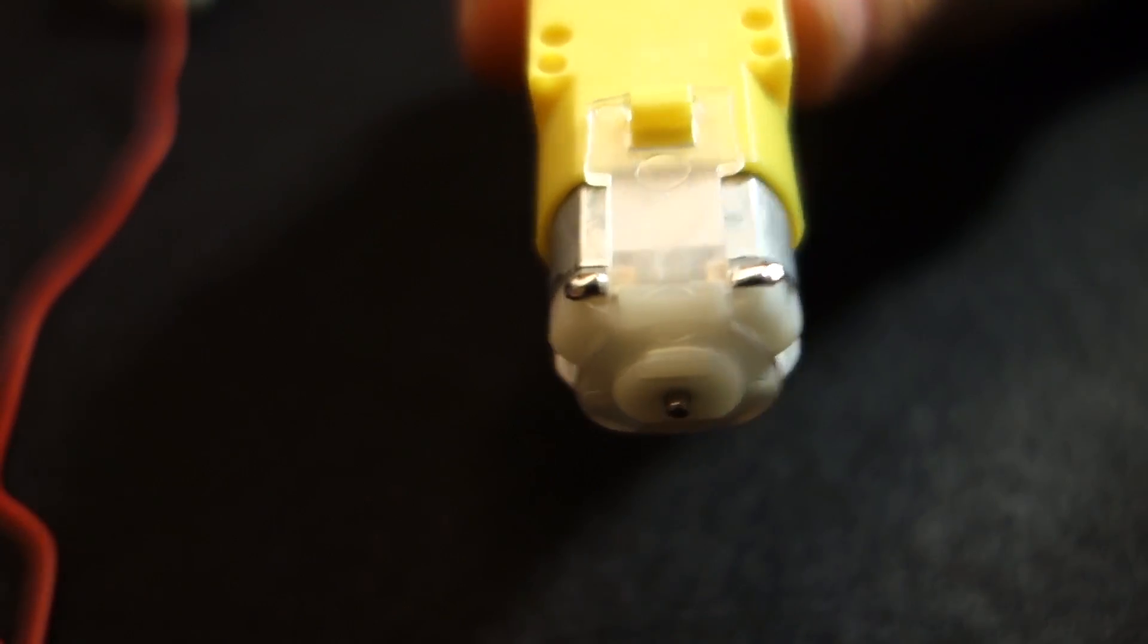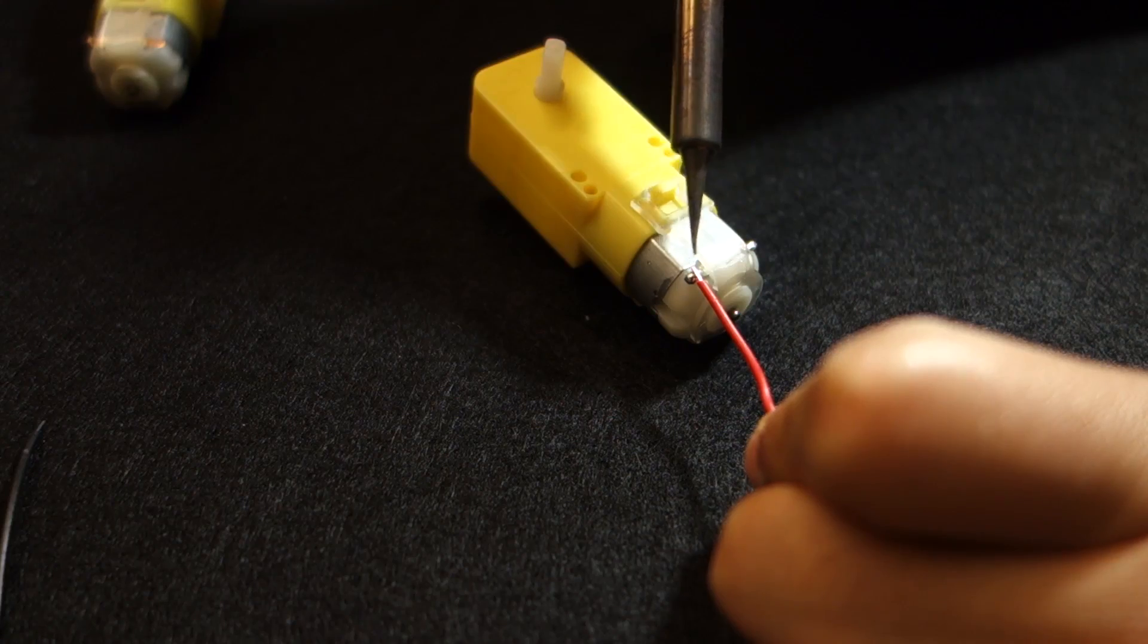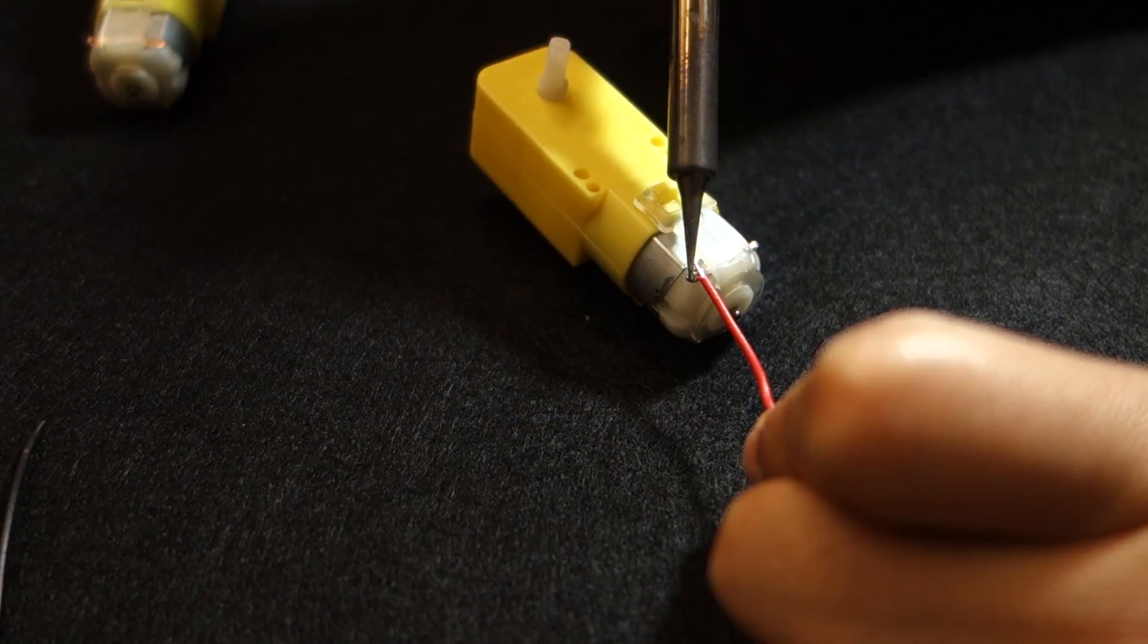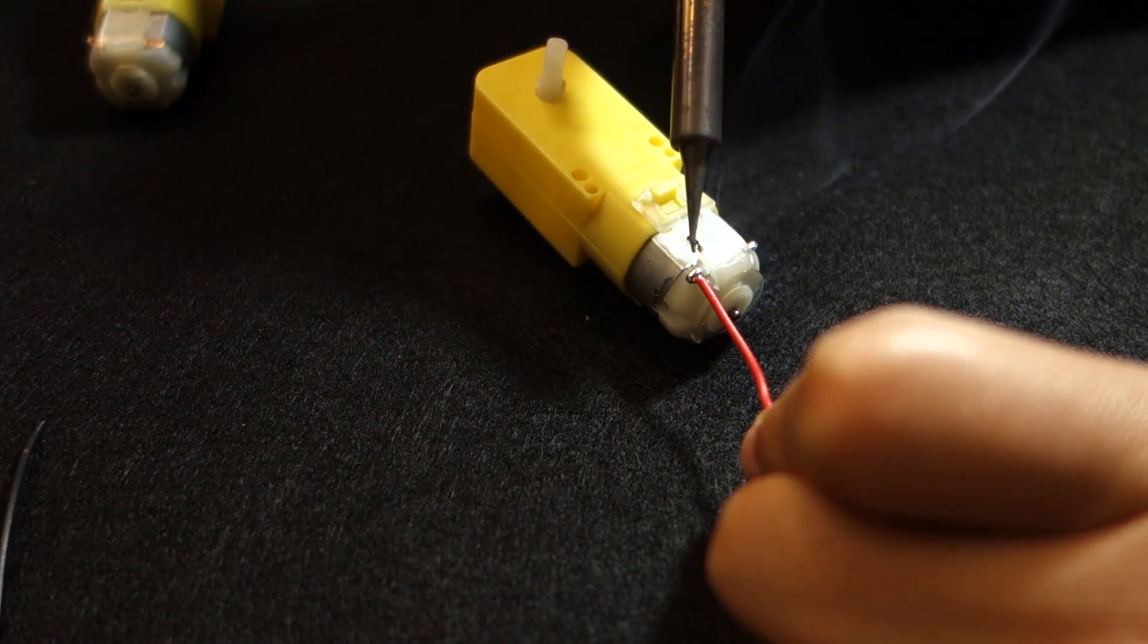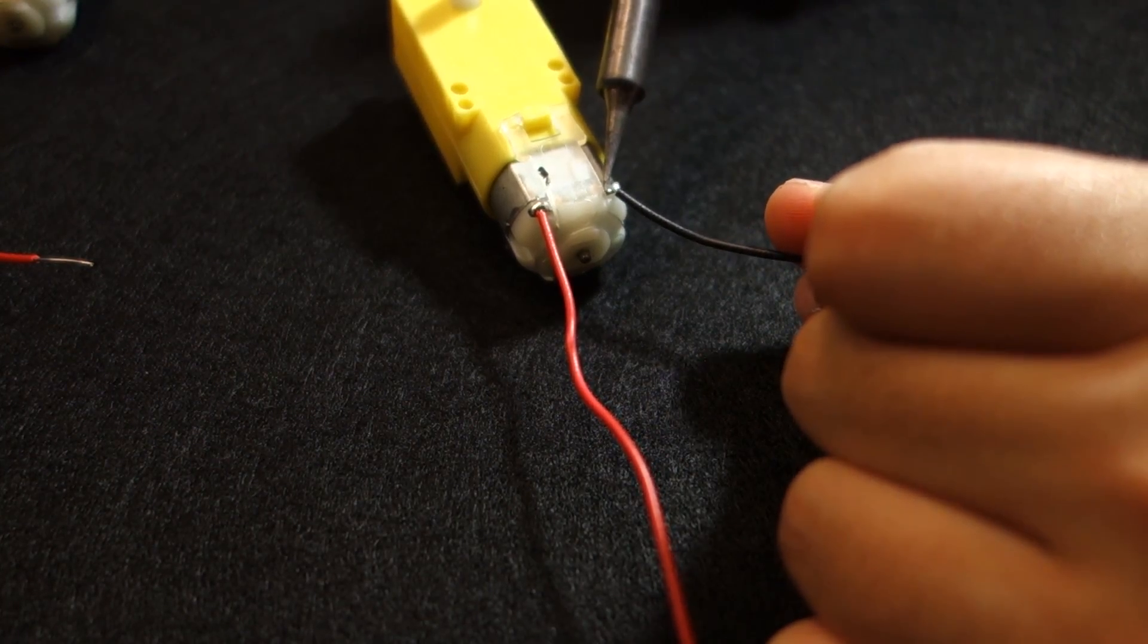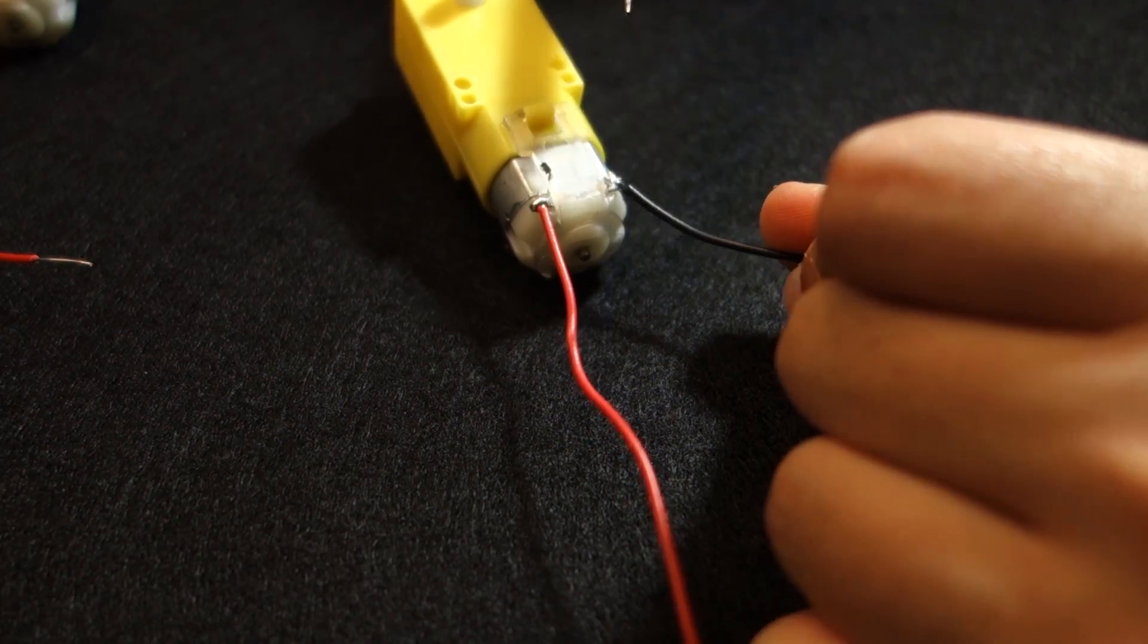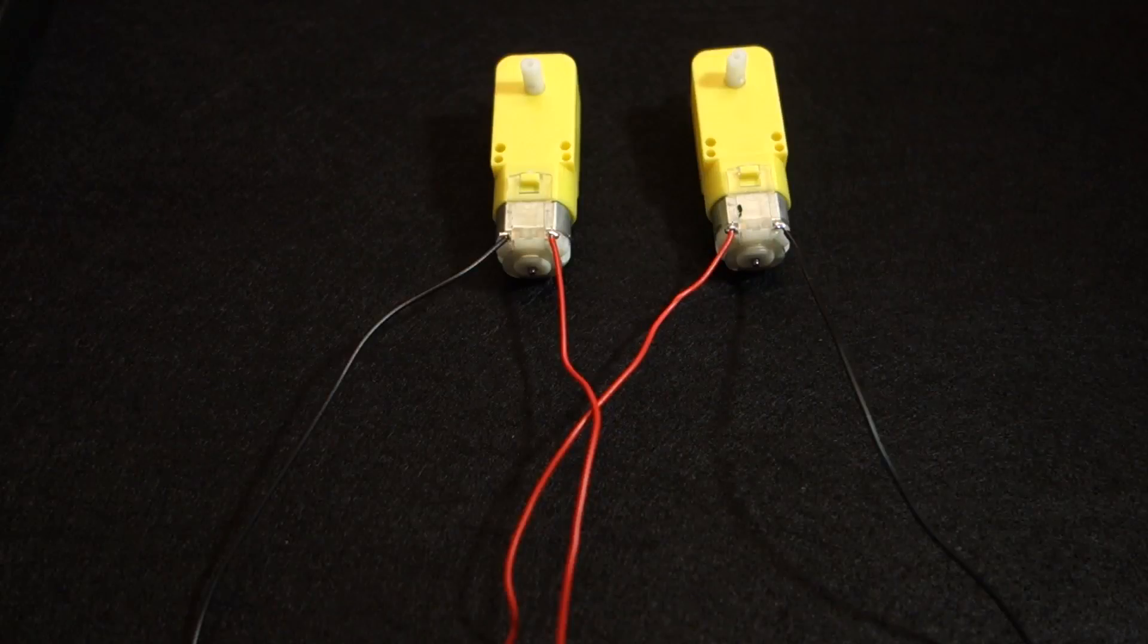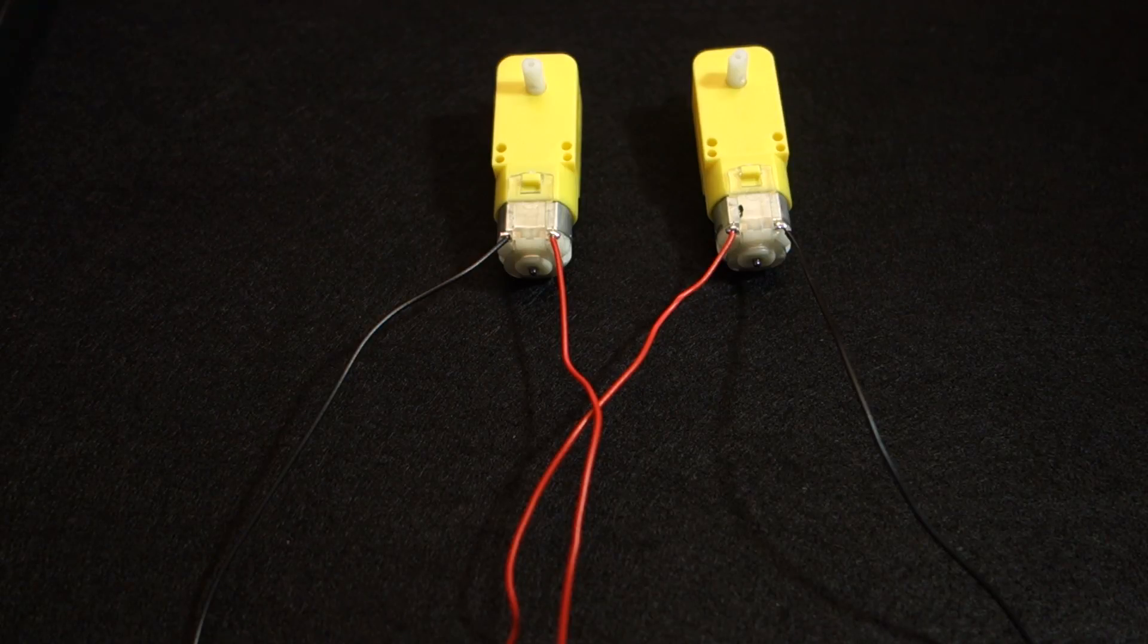Then, grab the wires and solder them to the DC motor pin. Repeat that process to all the other wires. This is how my motors looked like in the end.